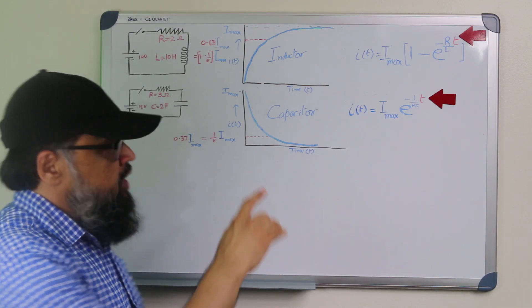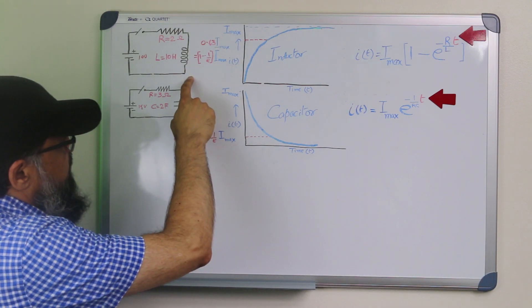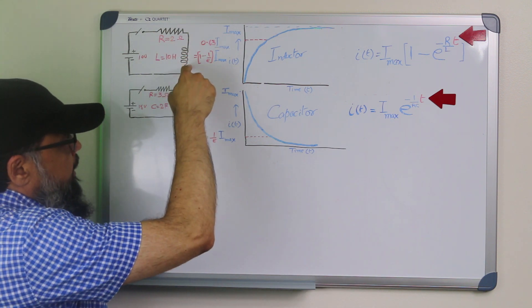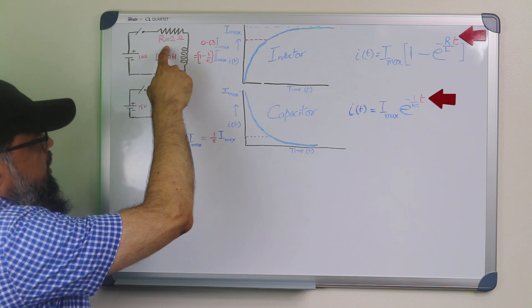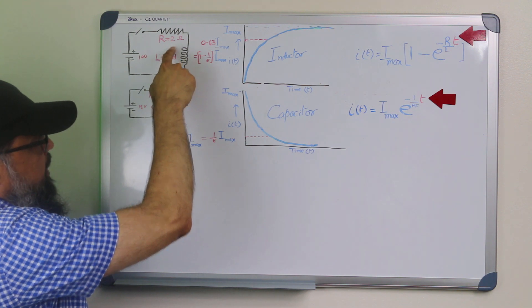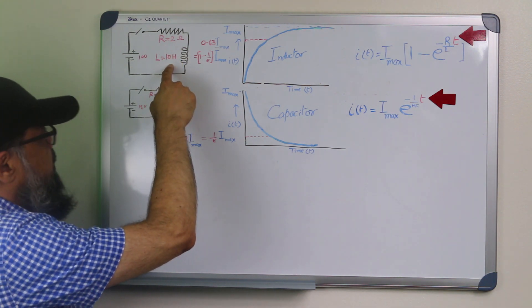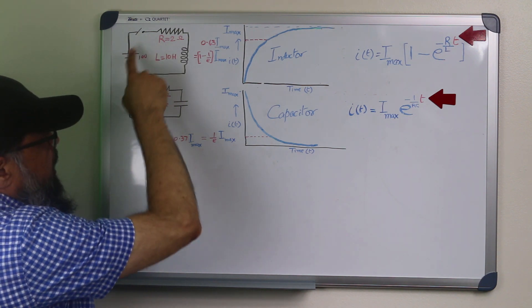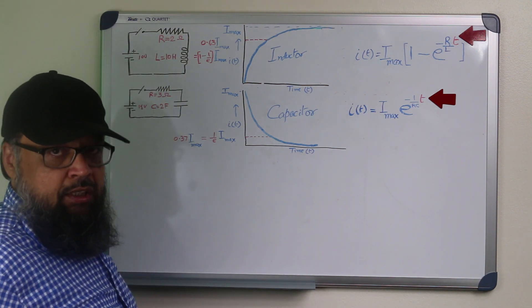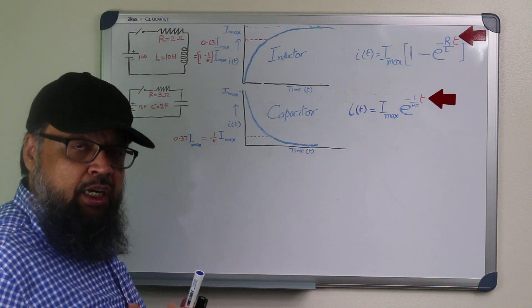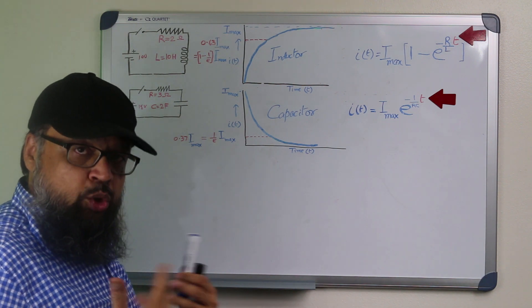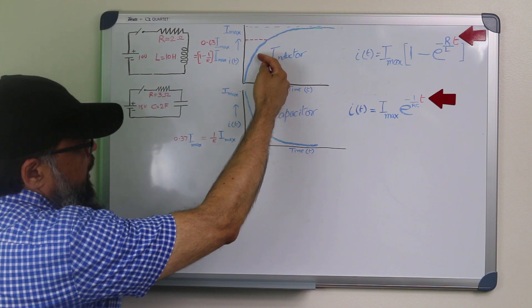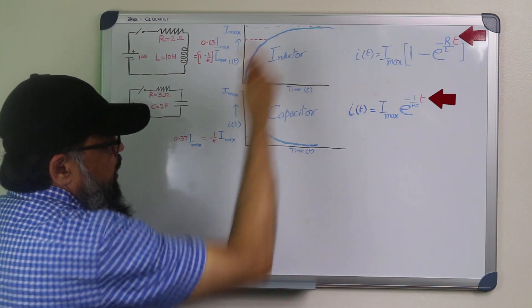The first circuit is called an RL circuit, because we have a resistor and an inductor. The resistor is 2 ohms, the inductor is in Henrys, and we have applied 10 volts. So when we close the switch, initially there is no current, because the inductor uses the current to store energy. But slowly this current starts to build up and then it reaches a maximum value.